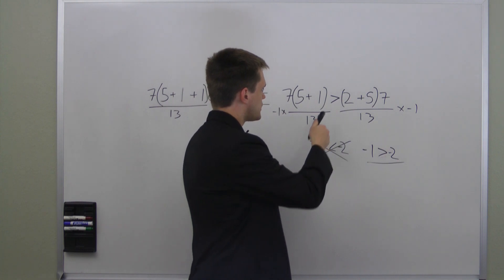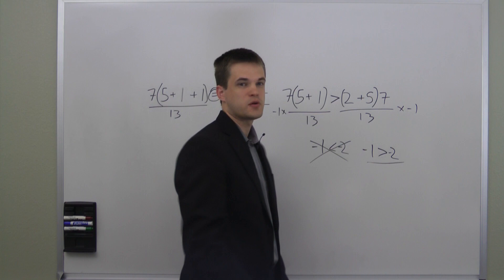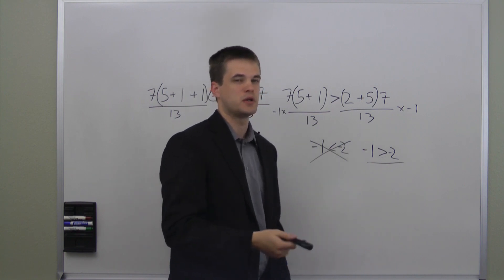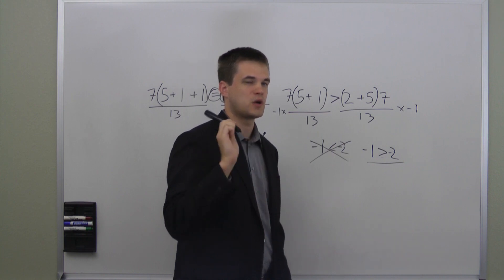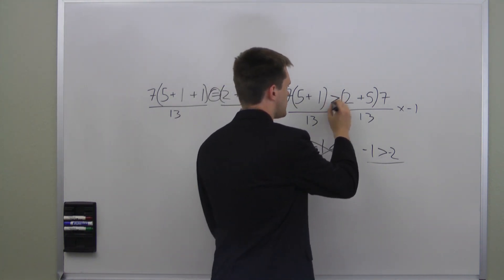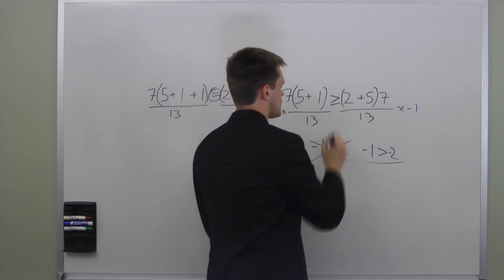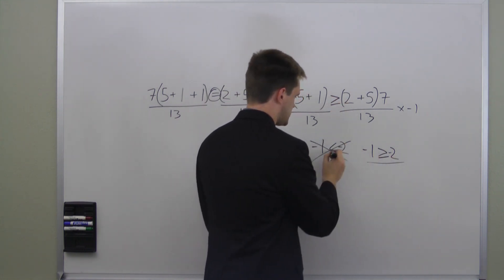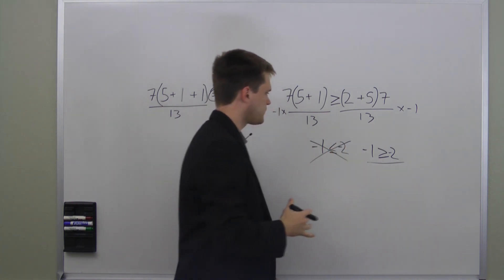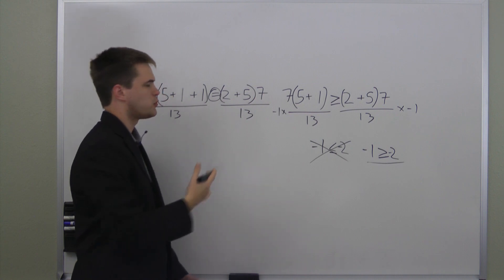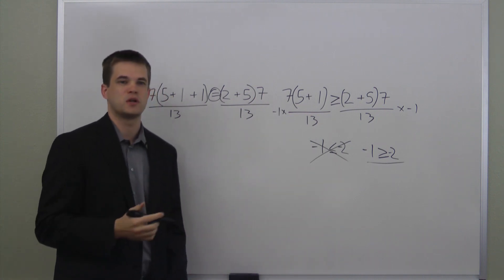You can have greater than or less than, and you can also have greater than or equal to, which is a combination of equations and inequalities. We write greater than or equal to as a greater-than sign with a line under it, and similarly less than or equal to as a less-than sign with a line under it.